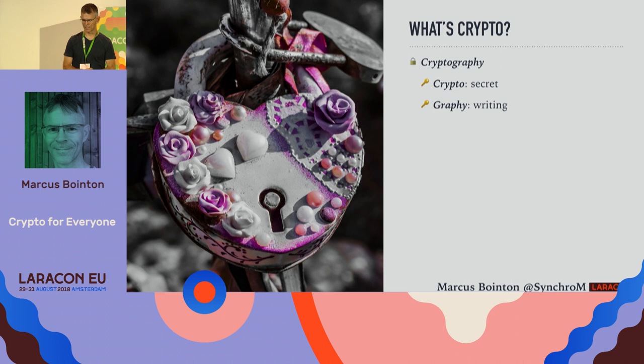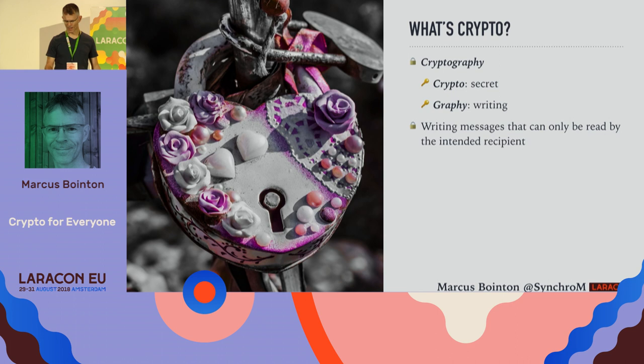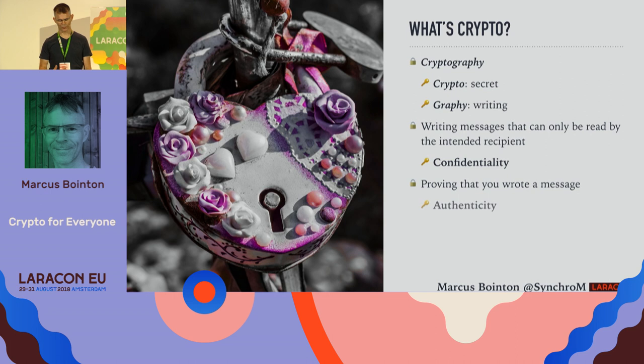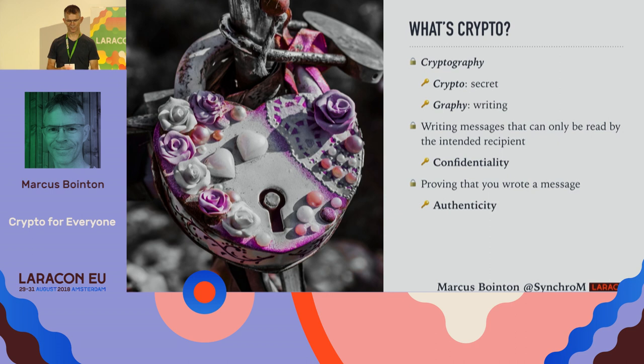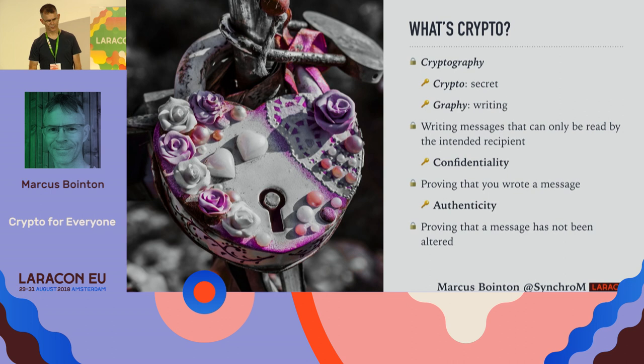Cryptography has three main functions in the kind of stuff we interact with frequently. First, we want to write messages that can be read only by the intended recipient — we call that confidentiality. Next, we want to prove that it was you that wrote a message — that's authenticity. The flip side of authenticity is non-repudiation: you can't deny that you wrote something if it's signed and authenticated by you. We also want to prove a message has not been altered in transit — that's integrity.